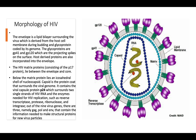The envelope is the lipid bilayer which surrounds the virus, derived from the host cell membrane, and also contains glycoproteins coded by its genome. The glycoproteins are GP41 and GP120. Host-derived proteins are also incorporated into the envelope. The matrix protein, also called the P17 protein, lies between the envelope and the core.